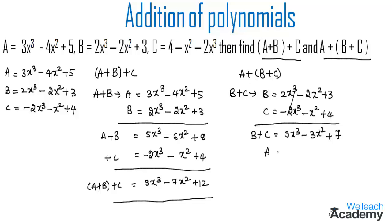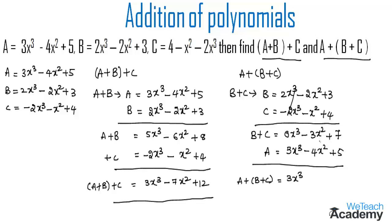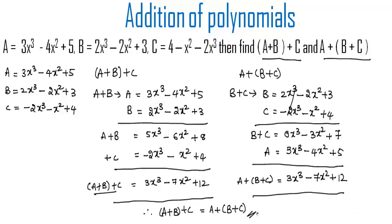Now we add expression A, which is 3x³ - 4x² + 5, to B+C. Adding: 3x³ remains, -4x² - 3x² = -7x², and 5 + 7 = 12. So A+(B+C) = 3x³ - 7x² + 12. We observe that (A+B)+C equals A+(B+C).